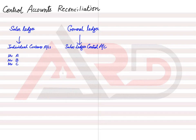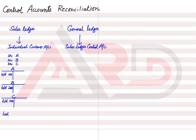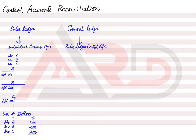In my example, there are three customers — Mr. A, Mr. B, and Mr. C — and we have T-accounts for all three with some balances. Mr. A owes us $100, Mr. B owes us $200, and Mr. C owes us $300. At the end of the period, we make a list of debtors, also known as the schedule of debtors or schedule of trade receivables. We list all three accounts: Mr. A at $100, Mr. B at $200, and Mr. C at $300. Adding all of these together, the total becomes $600 — so all our customers owe us $600 in total.